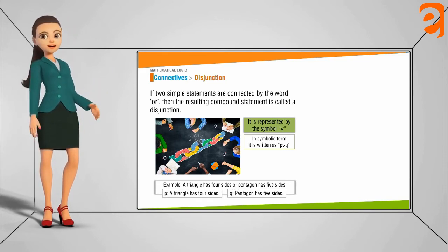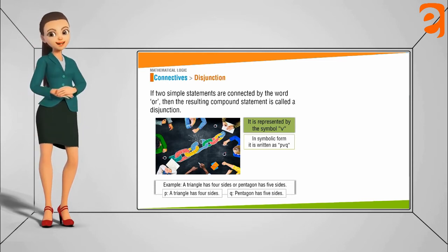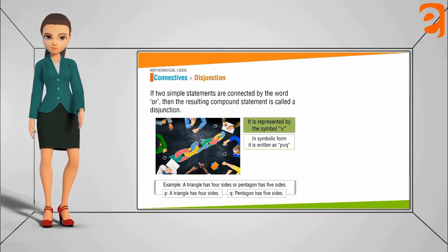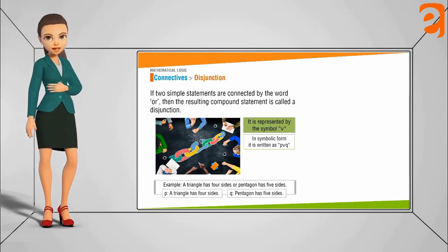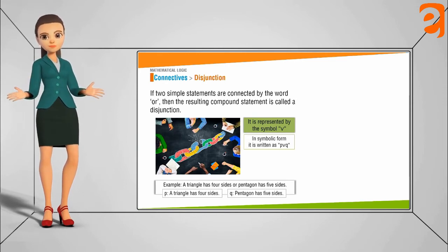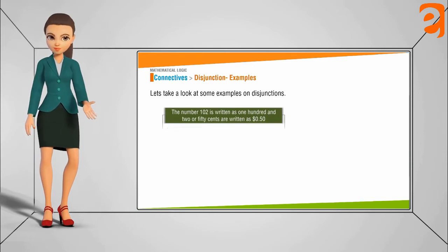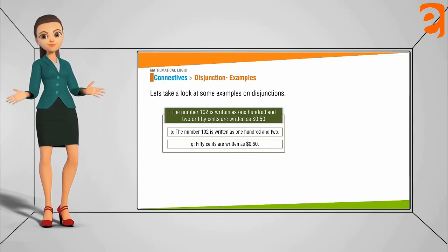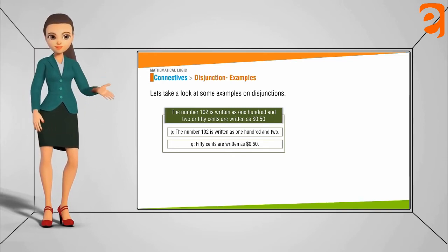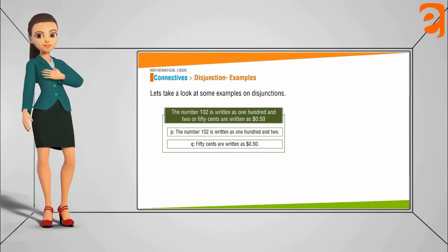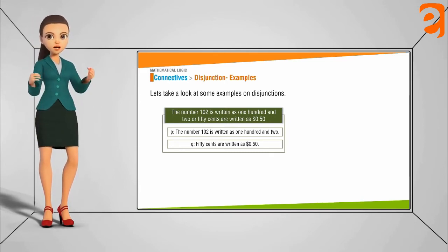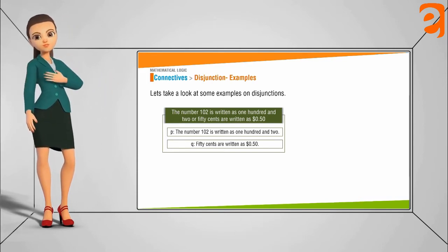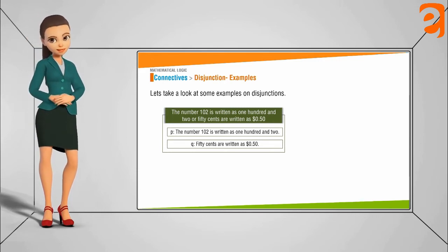Examples: suppose you have the two statements 'A triangle has four sides' and 'Pentagon has five sides.' Joining these with the word 'or' gives: 'A triangle has four sides or a pentagon has five sides.' Similarly, the two statements 'The number 102 is written as 102' and '50 cents are written as $0.50' — the disjunction is: 'The number 102 is written as 102 or 50 cents are written as $0.50.'